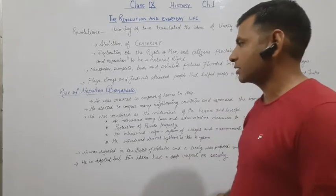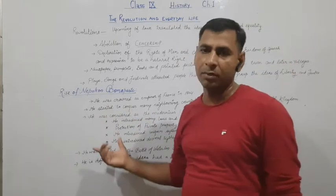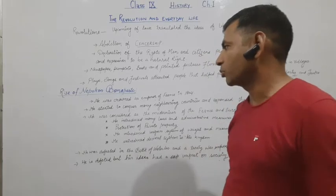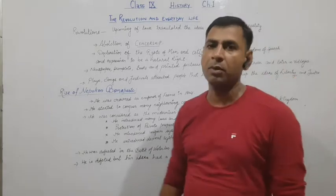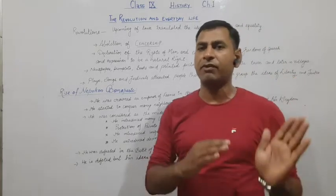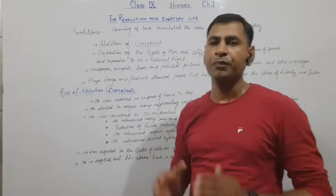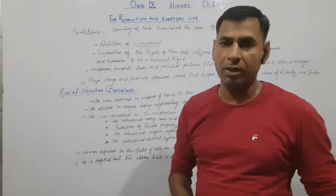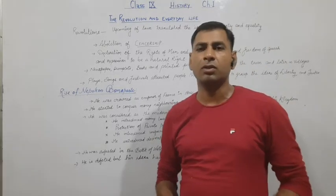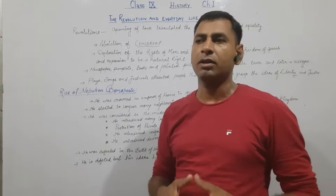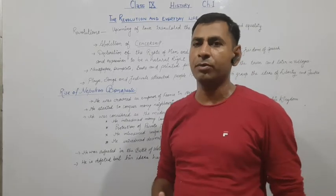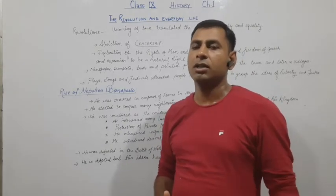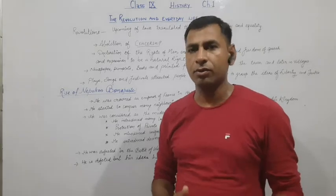Next is the most important part — the rise of Napoleon Bonaparte. As I have told you, we have some background. We discussed that there was a parliament of five members — the Directory — which had five elected executives.